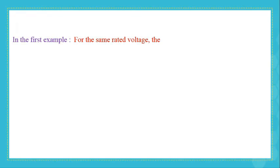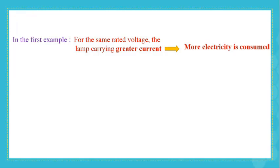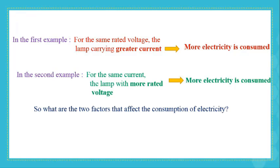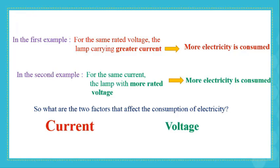The first example shows that, for the same rated voltage, the lamp carrying greater current consumes more electricity. The second example shows that, for the same current, the lamp with more rated voltage consumes more electricity. So, what are the two factors that affect the consumption of electricity? Current and voltage.